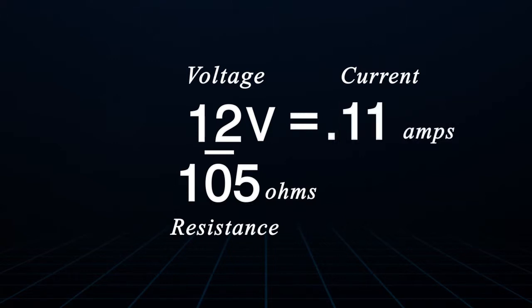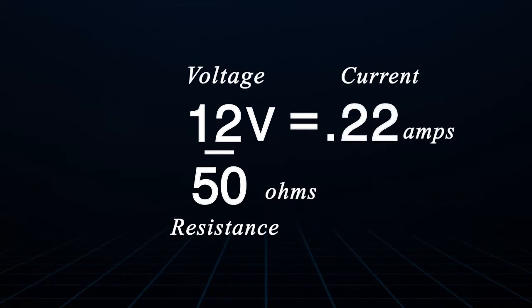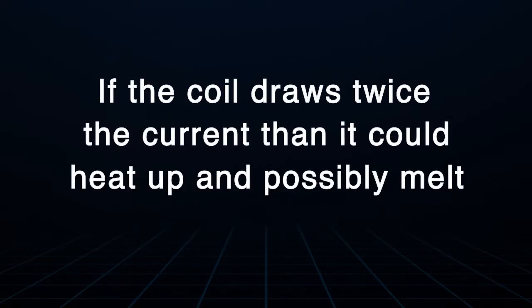If we were to test this coil and find that the resistance was 50 ohms instead of 100, that would mean it would draw twice the current that it should. If it were to draw twice the current, it could heat up and possibly melt.